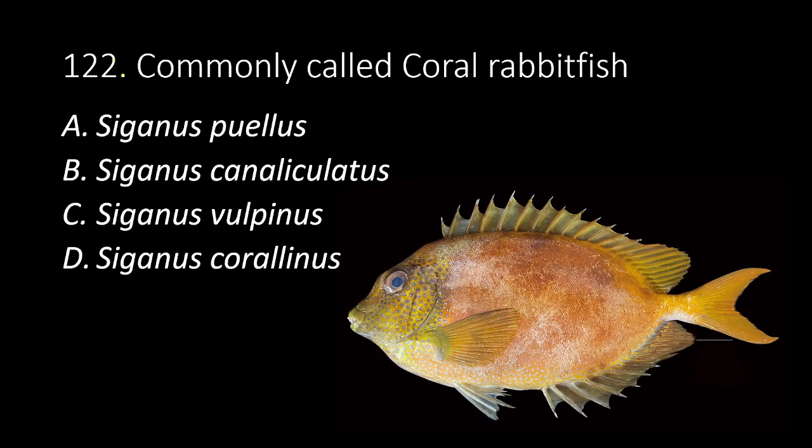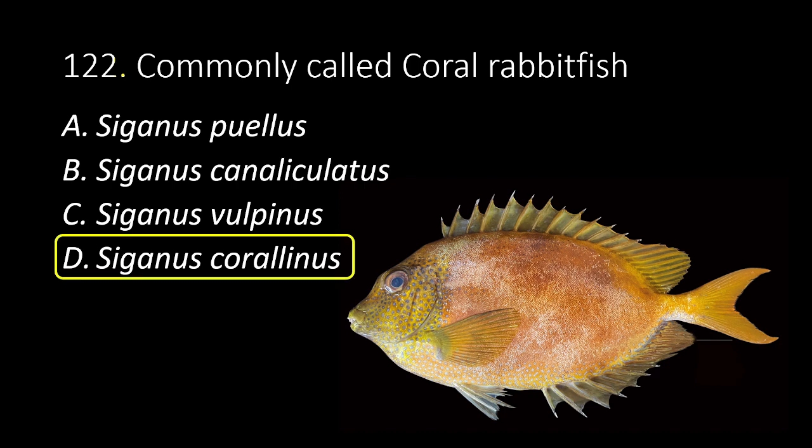122. Commonly called coral rabbit fish. A. Siganus puellus. B. Siganus canaliculatus. C. Siganus vulpinus. D. Siganus corallinus. The answer is D, Siganus corallinus.